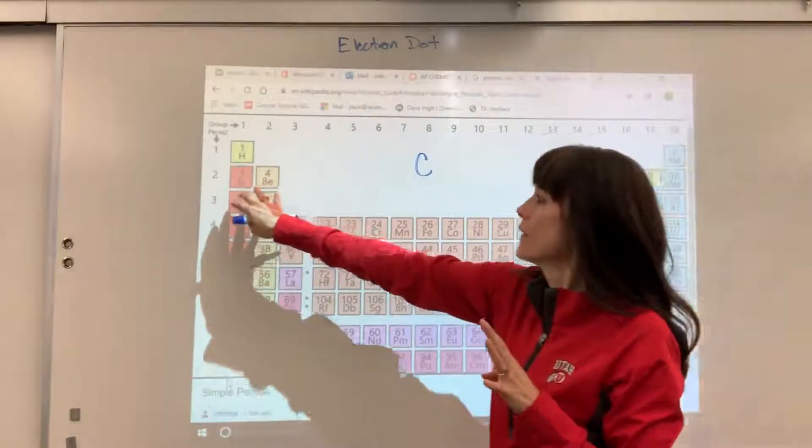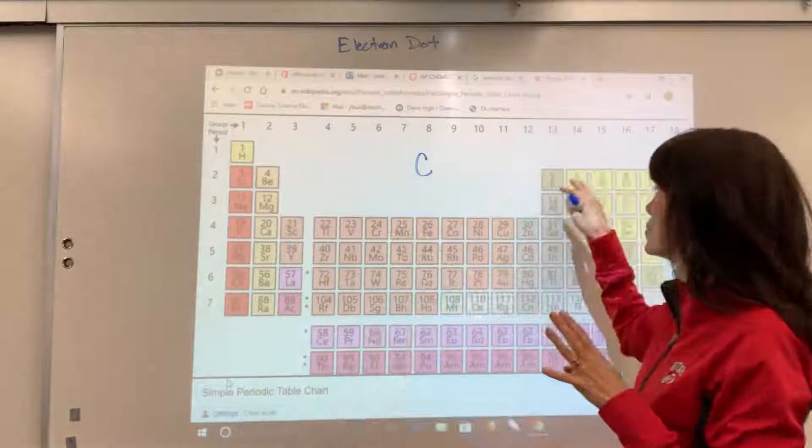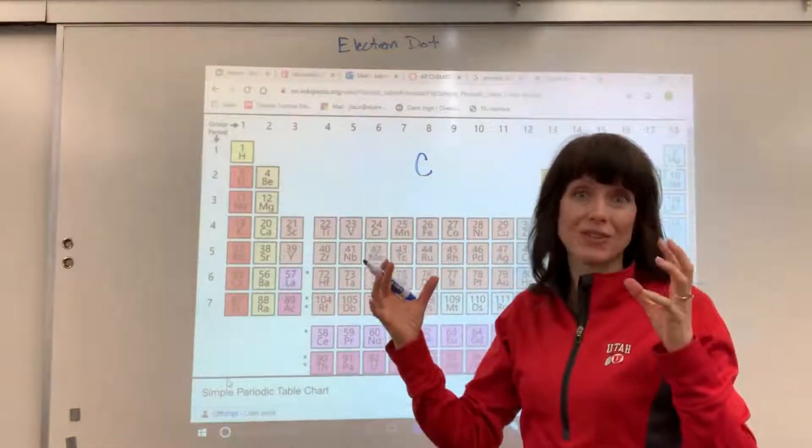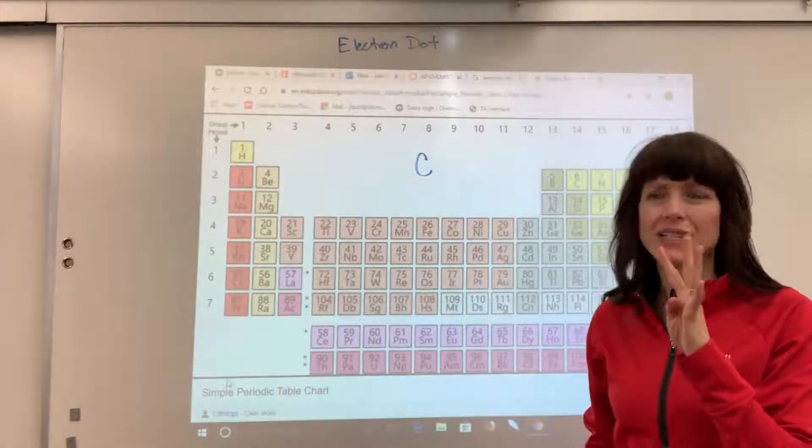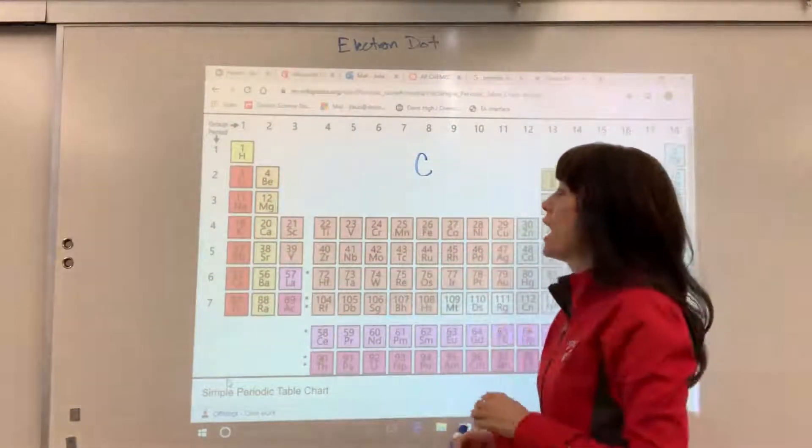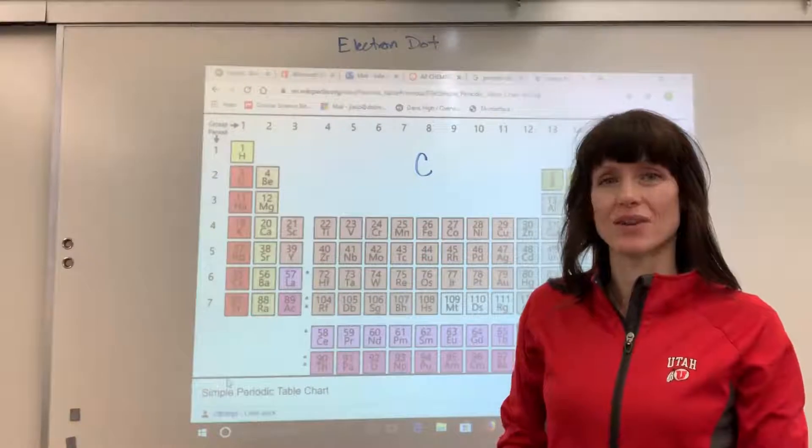And just as a reminder, that's from the 2S and the 2P. That's the outermost energy level, the valence shell for carbon. So four valence electrons, and we need to put those valence electrons as dots around the carbon.